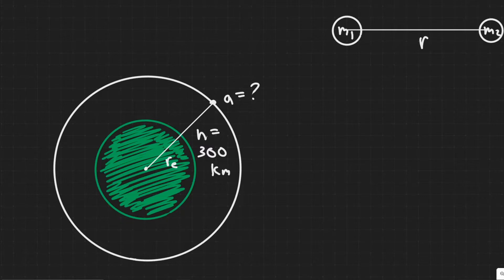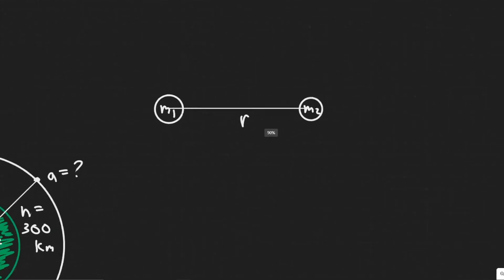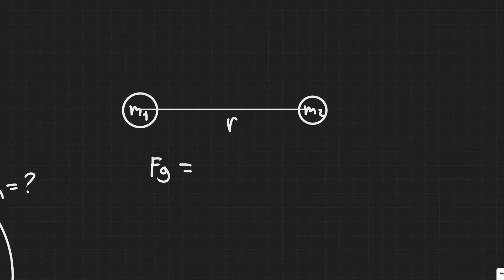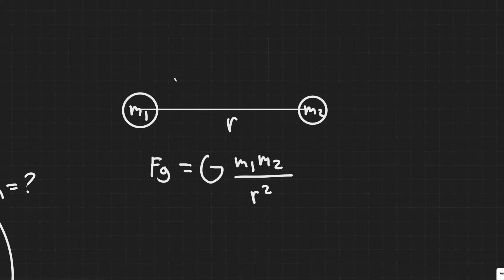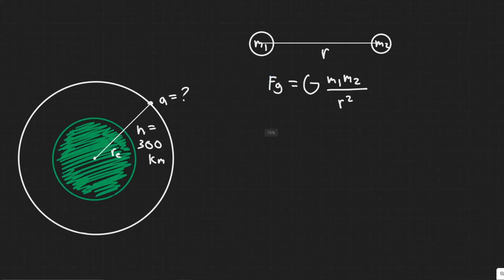What we're trying to calculate is the acceleration due to gravity at that point. To do this, you should understand Newton's Law of Gravitation. Imagine we have two masses with a radius between them. Any object is going to experience a force due to gravity from another object, and we can calculate that value: the force of gravity experienced by one object due to another is equal to G, the gravitational constant, multiplied by m1 times m2, divided by r squared, where m1 and m2 are the masses of the two objects and r is the distance between them.